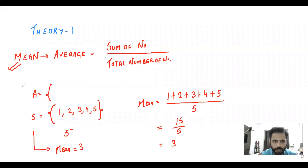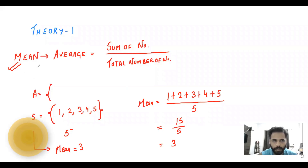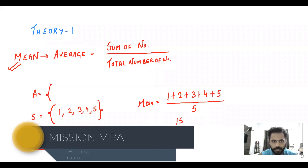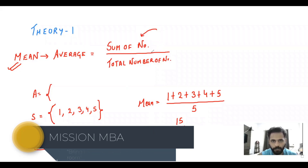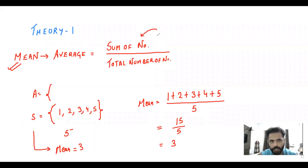So the mean of this set is 3. That is the basic meaning of mean — simply average, with the formula: sum of numbers divided by total number of numbers. From lecture 3, we'll start seeing questions involving percentages with the mean. Now let's move to the next concept: median.